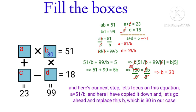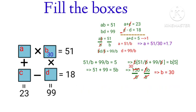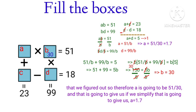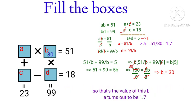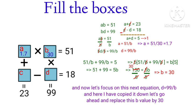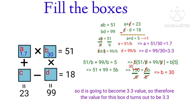Now let's find A. Using A equals 51 divided by B, replacing B with 30 gives us A equals 51 divided by 30, which simplifies to A equals 1.7. So the value of box A is 1.7. Next, D equals 99 divided by B — replacing B with 30 gives D equals 3.3. So the value of box D is 3.3.